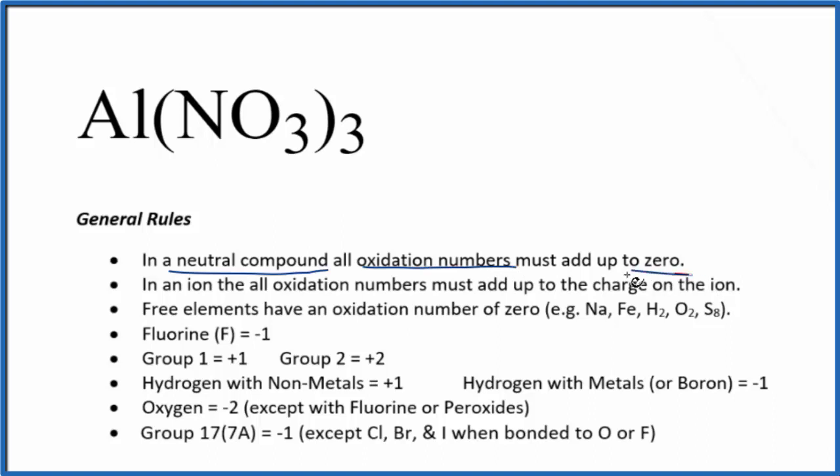We also notice that we have this NO3 here. This is the nitrate ion. This is an ion and its charge is one minus, so the charge on the entire nitrate ion is one minus. Looking at our rules, if we have an ion, all the oxidation numbers add up to the charge on the ion.